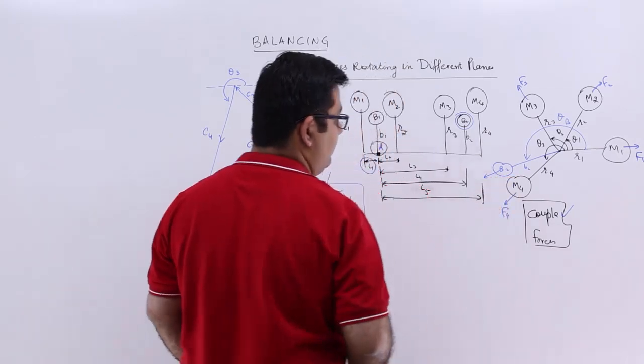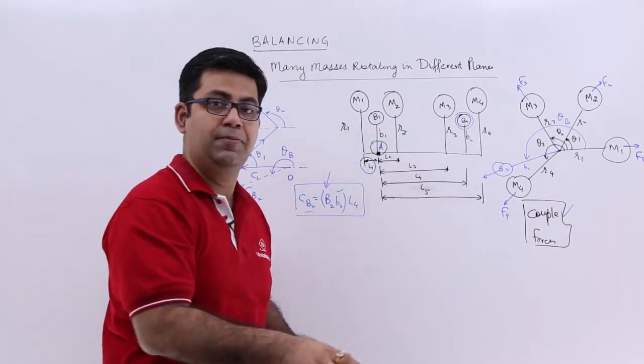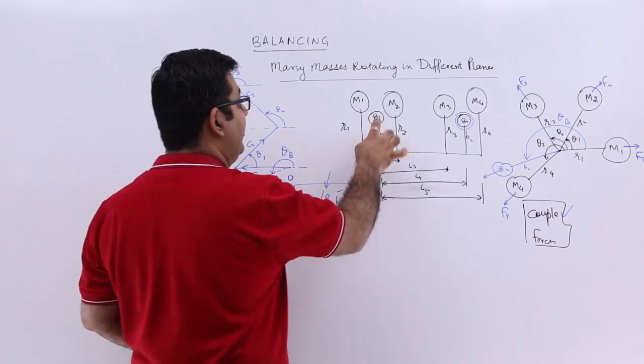So the force would be like this. With the help of this force polygon and B2 known to us, we can find out B1.